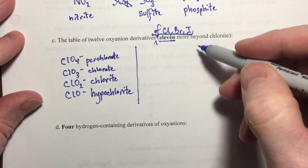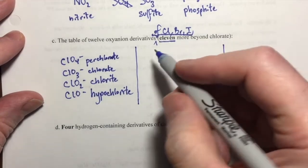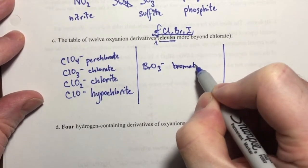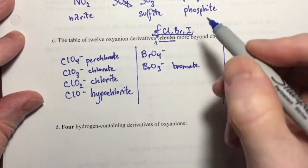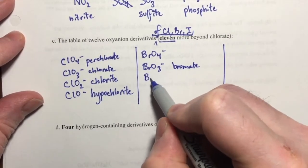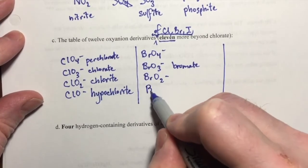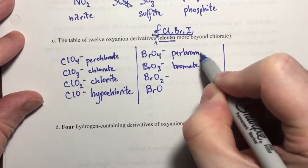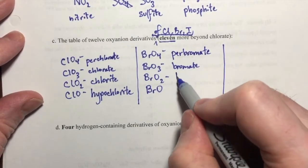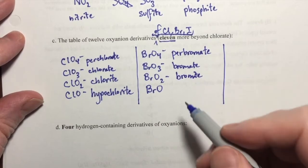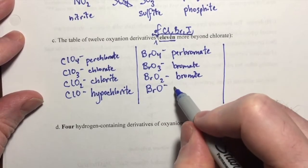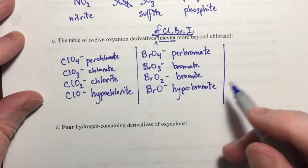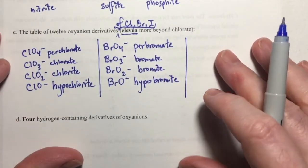And we are going to do the exact same thing for bromine and for iodine. So we have BrO3 with a minus charge is bromate. We have one oxygen more, one oxygen less, and two oxygens less. Perbromate, bromite, and hypobromite.